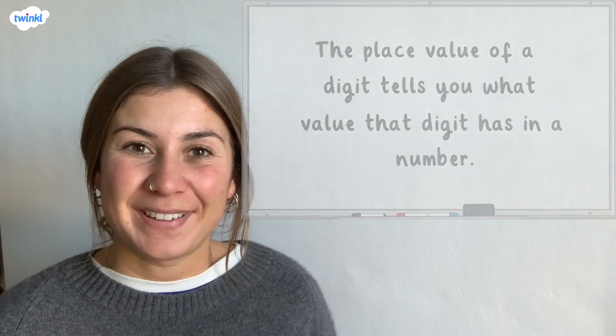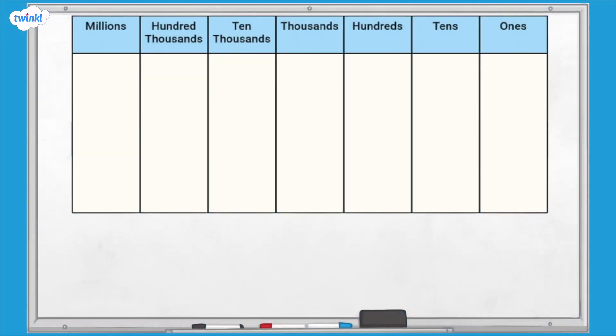Let's take a look at a number. If we write the number onto a place value chart, we can identify the value of each digit. We need to make sure that we don't leave any empty columns when we start from the ones and move left across the chart. We can use place value counters to help us too. Let's look at the value of each digit.